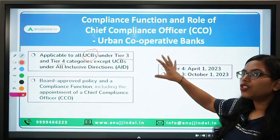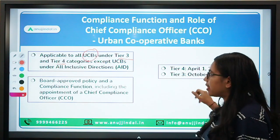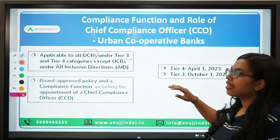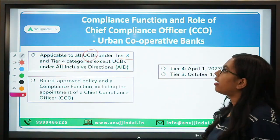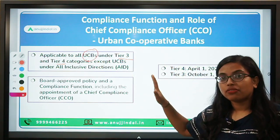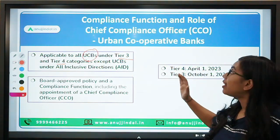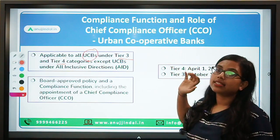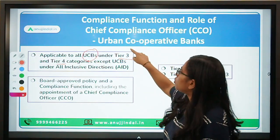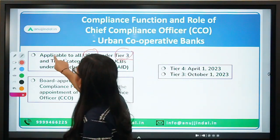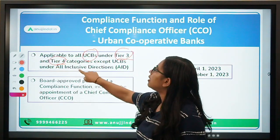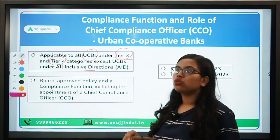The guidelines related to the compliance function as well as the role of the CCO will be applicable to Tier 3 and Tier 4 categories of UCBs, except UCBs under all-inclusive directions.